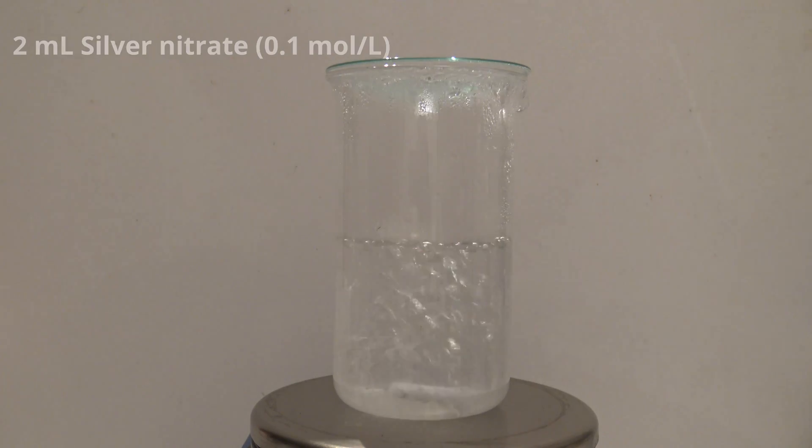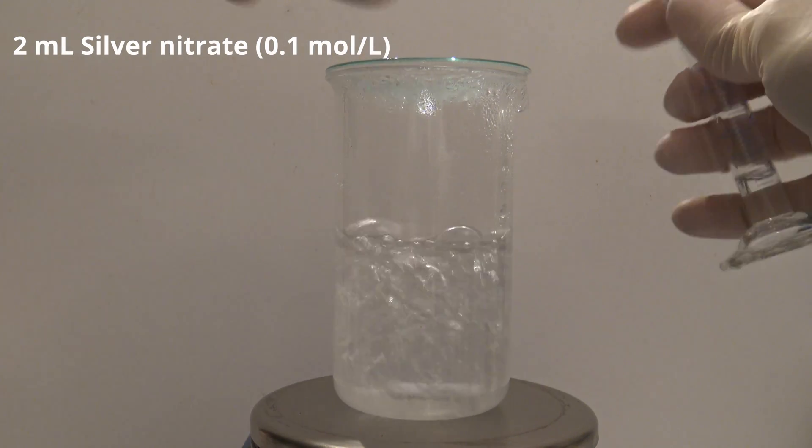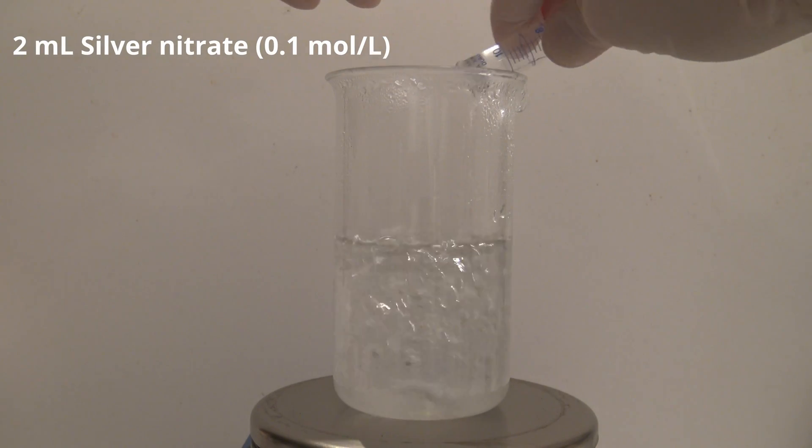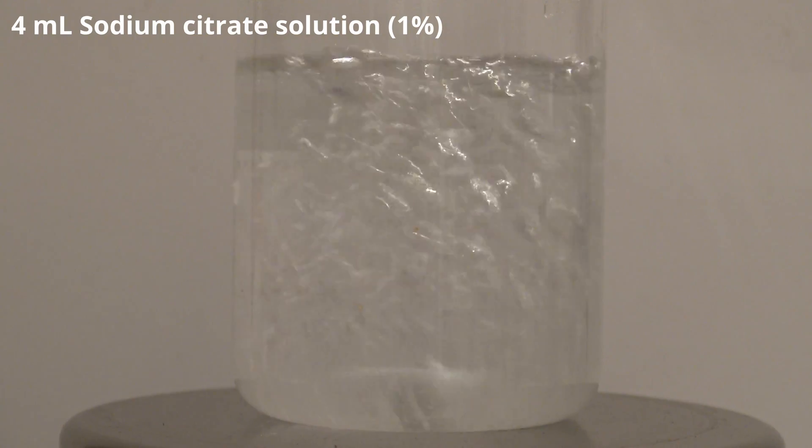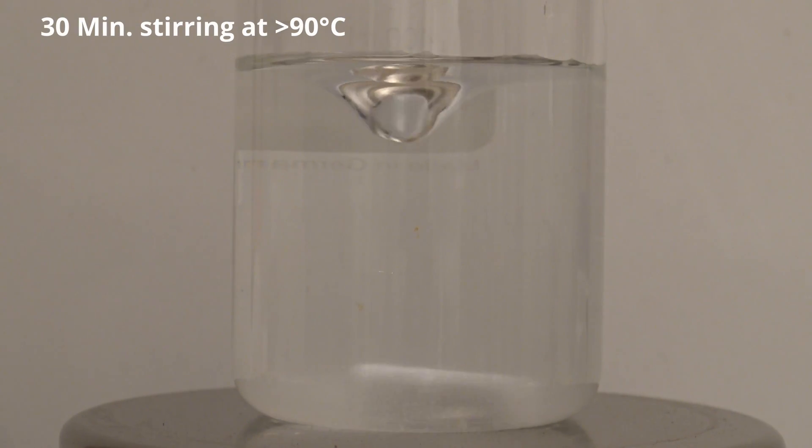When the water is boiling, two milliliters of a 0.1 molar solution of silver nitrate is added first, followed by four milliliters of a one percent solution of sodium citrate. Then the solution is stirred for half an hour while keeping it above 90 degrees Celsius.